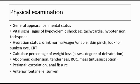We should also calculate the percentage of weight loss to assess the degree of dehydration. For abdominal examination, we look for distension, feel for tenderness, and palpate for any mass at the right upper quadrant, which might suggest intussusception as a differential diagnosis. For perianal examination, we check for any excoriation or anal fissure that might be causing bleeding. We also check the anterior fontanel to see if it is sunken in severe dehydration.